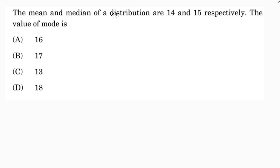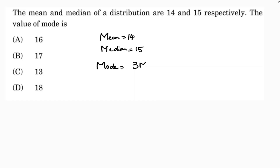The mean and median of a distribution are 14 and 15 respectively. We need to find the mode using the empirical relation: Mode = 3·Median − 2·Mean.